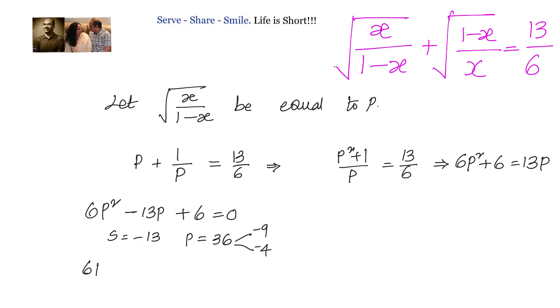So we can write down 6 p square minus 9 p minus 4 p plus 6 equals to 0. I can take 3p common, will have 3p into 2p minus 3, 2 into again 2p minus 3 equals to 0.